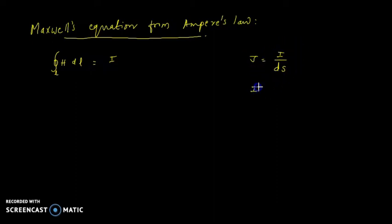From this expression, I equals J ds. So, Ampère's law can be rearranged in terms of J as the surface integral of the current density J.